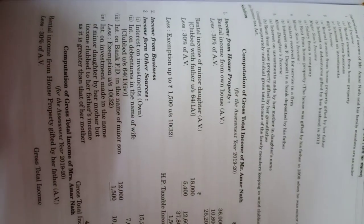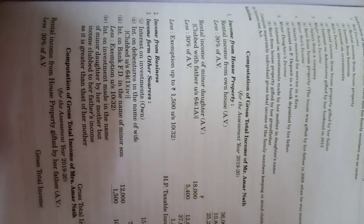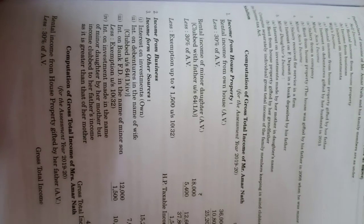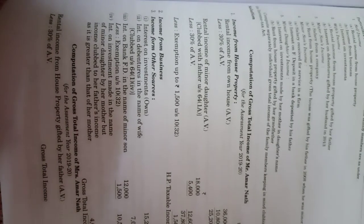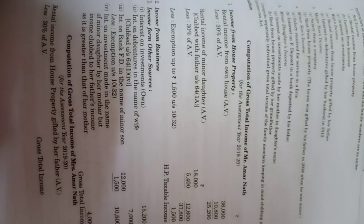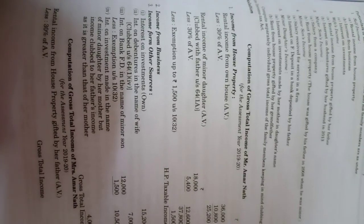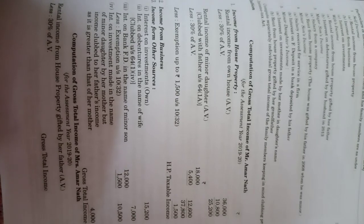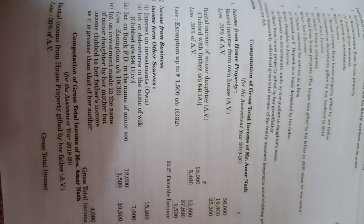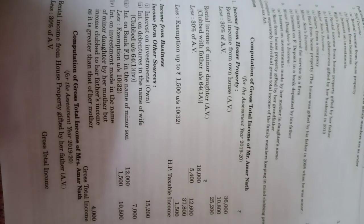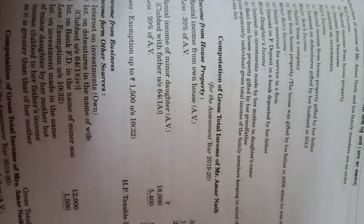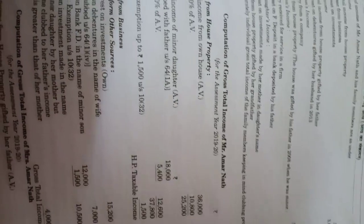We calculate income from house property: 30% standard deduction as per Section 24A is ₹10,800, so income from house property is ₹25,200. The second income is income from business: ₹32,000 — taken as given. Then interest on investment from own sources: ₹15,200.